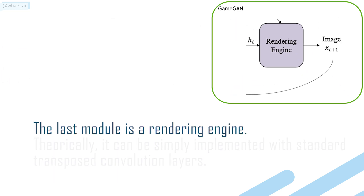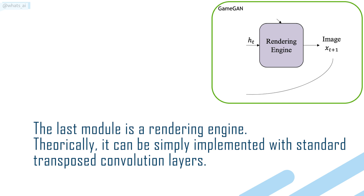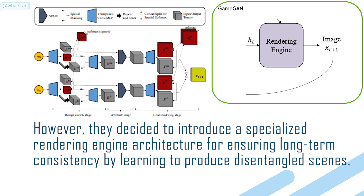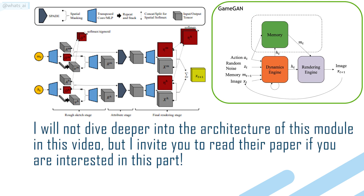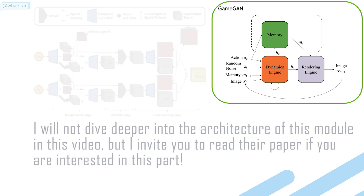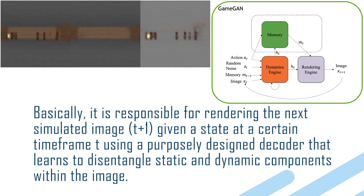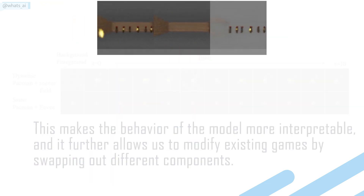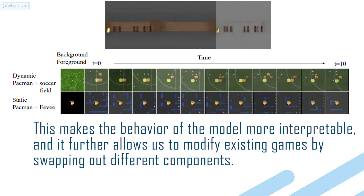The last module is a rendering engine. Theoretically, it can be simply implemented with standard transpose convolution layers. However, they decided to introduce a specialized rendering engine architecture for ensuring long-term consistency by learning to produce disentangled scenes. Basically, it is responsible for rendering the next simulated image given a state at a certain time frame t, using a purposely designed decoder that learns to disentangle static and dynamic components within the image. This makes the behavior of the model more interpretable and further allows us to modify existing games by swapping out different components.